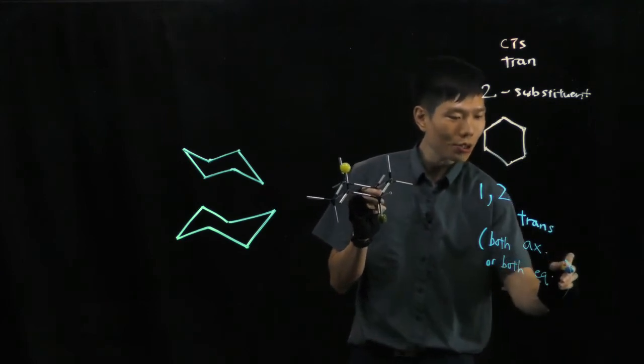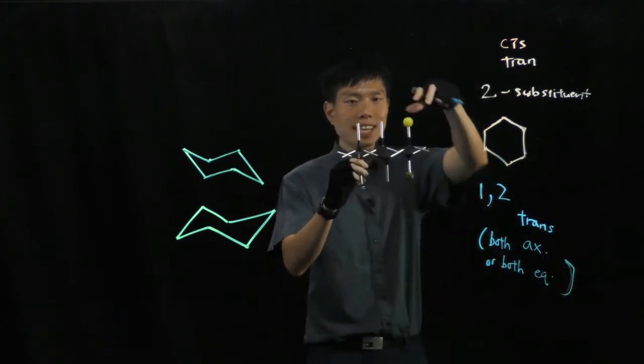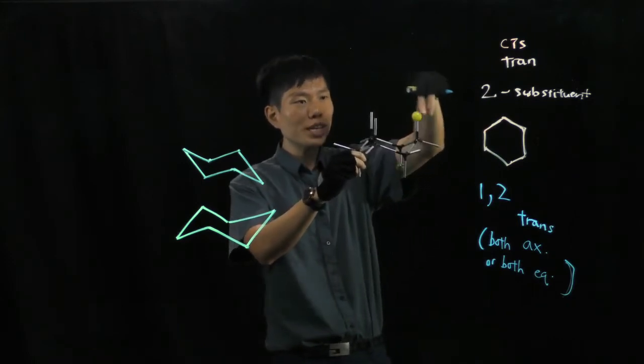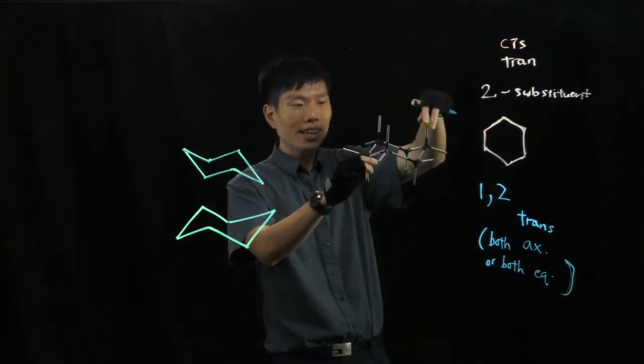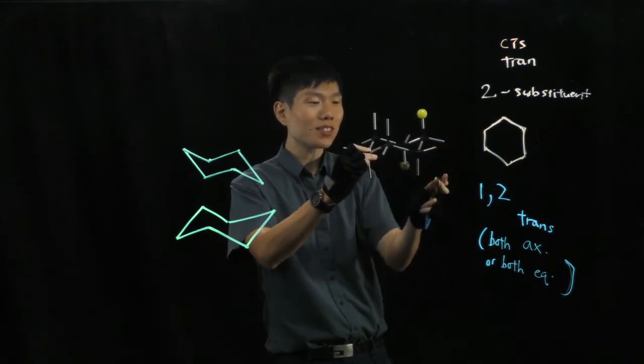And you can tell which is more stable. Because if you have axial in this case, then the top side you experience 1,3 diaxial interaction, as well as coming from the bottom side, 1,3 diaxial interaction. So this is very poor.